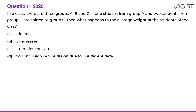Next question: in a class there are three groups A, B and C. If one student from group A and two students from group B are shifted to group C, what happens to the average weight of the students of the class? All students of the class are still inside the class only. So the average weight of the class is not being changed — it remains the same. Option C is the correct choice.